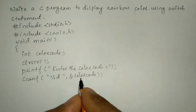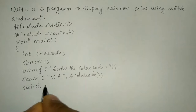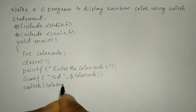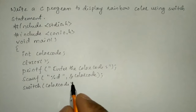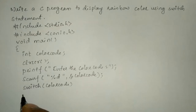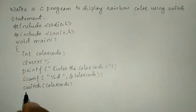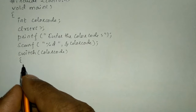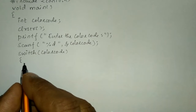Now we have to pass this color code entered by the user into a switch statement. I'm going to write switch and inside the round bracket write color code. Whatever color code is entered by the user will be matched with the case label. If it matches any case label, that particular case label's code will get executed. I'll use a curly open brace — this indicates the beginning of the body of the switch statement.